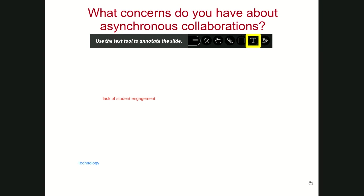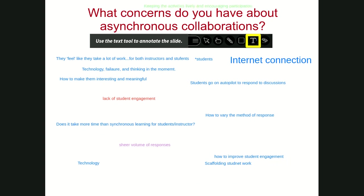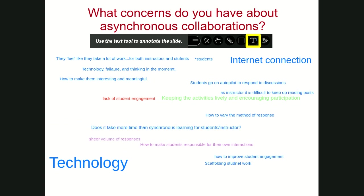Participants are typing in concerns: lack of student engagement, technology issues, students going on autopilot in discussions—how to make them interesting and meaningful. They feel like they take a lot of work for both instructor and student. Does it take more time than synchronous learning? Tech failure. Keeping activities lively and encouraging participation. Scaffolding and improving student engagement. Sheer volume of responses and how to make students responsible.